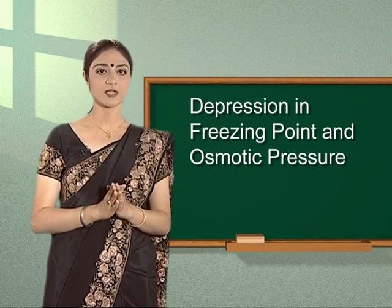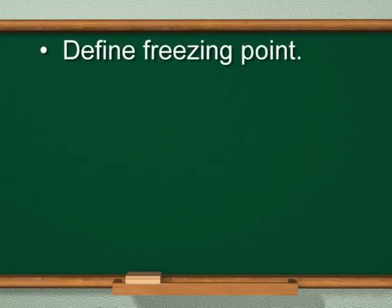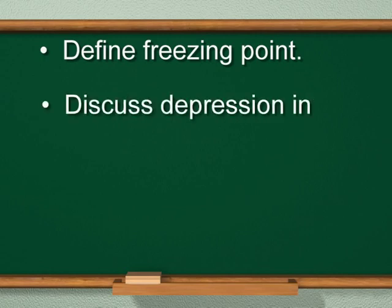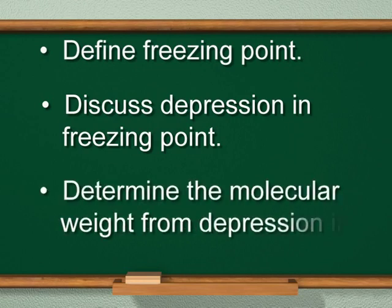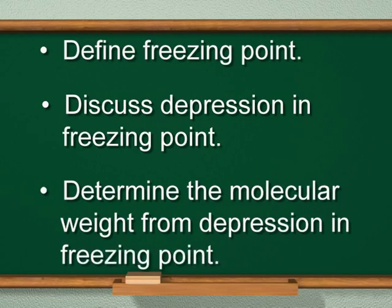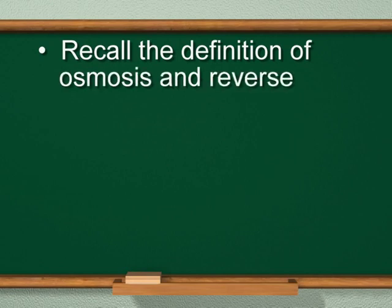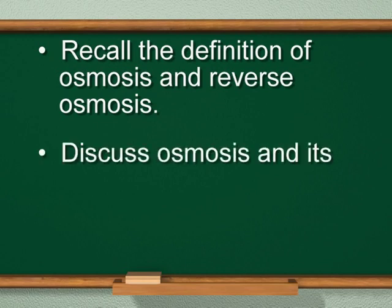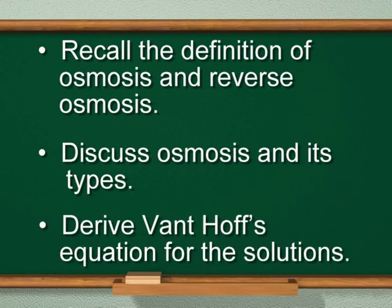Let us look at the learning objectives of today's part. After completion of this topic, learners will be able to: define freezing point, discuss depression in freezing point, determine the molecular weight from depression in freezing point, recall the definition of osmosis and reverse osmosis, discuss osmosis and its types, and derive Van't Hoff's equation for solutions.